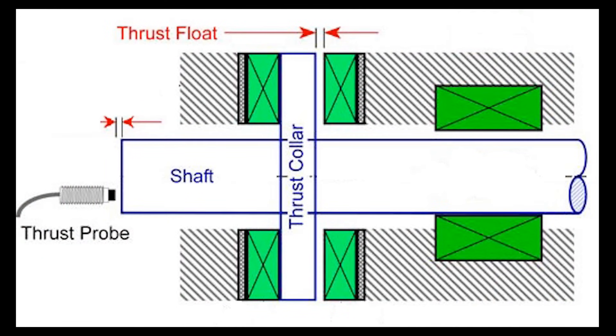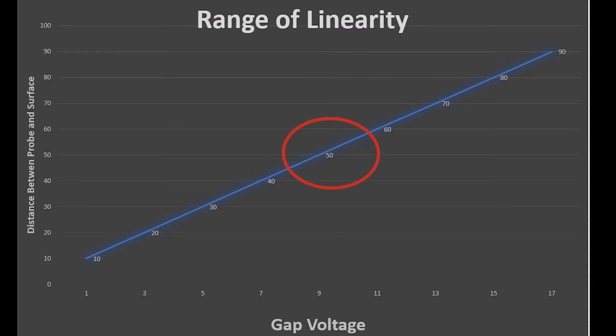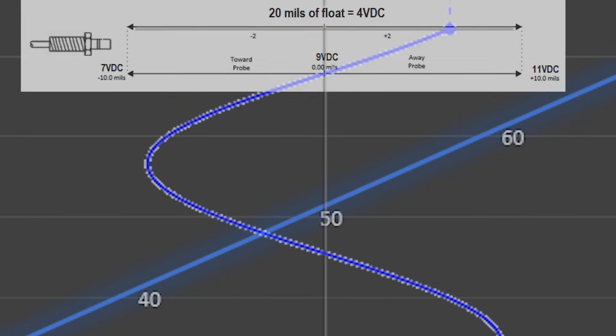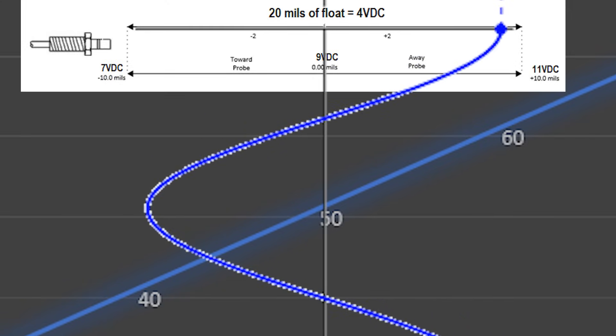The axial float of a rotating shaft can be measured using this gap voltage. When used in this type of application, the probe is mounted facing the end of the shaft. The initial gap voltage setting is established to align the center of the linear range with the center of the total shaft float. Any axial displacement will create a change in voltage.